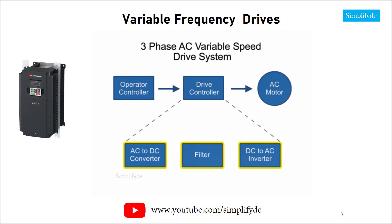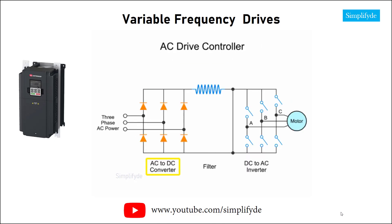The converter, or rectifier component, consists of an array of fast-acting switches that convert an incoming AC voltage to a pulsating DC voltage. The intermediate circuit acts as a filter and consists of a DC bus and associated circuitry.